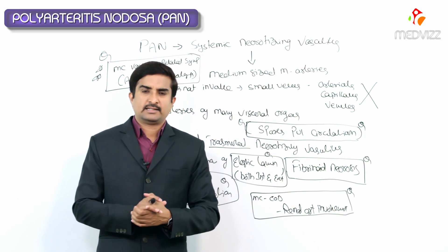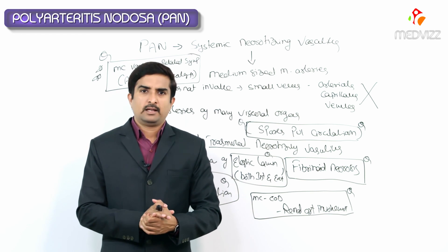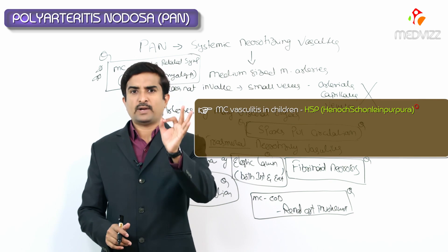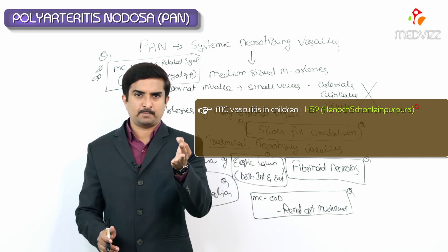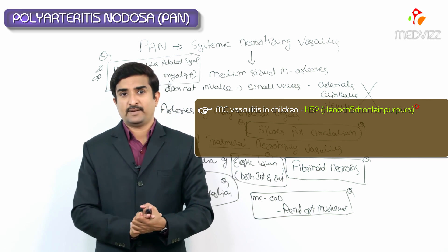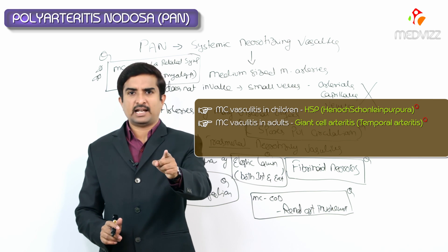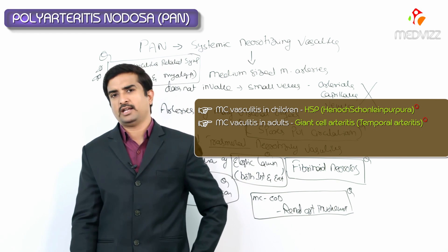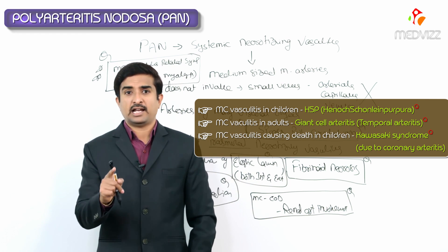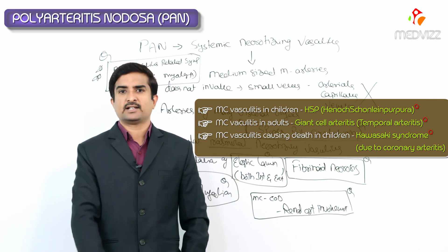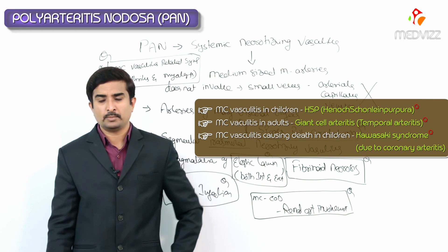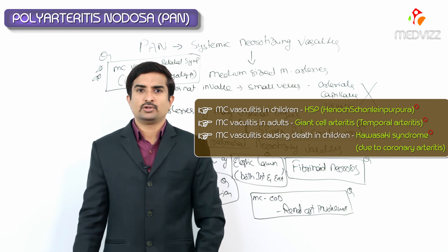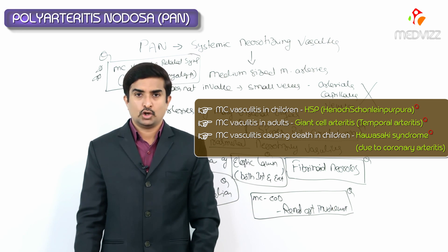Key MCQ summary: The most common vasculitis in the pediatric age group is HSP (Henoch-Schönlein Purpura), also called IgA vasculitis. The most common vasculitis in adults is Giant Cell Arteritis, also called temporal arteritis. The most common vasculitis causing death in the pediatric group is Kawasaki disease, due to involvement of the coronary arteries.